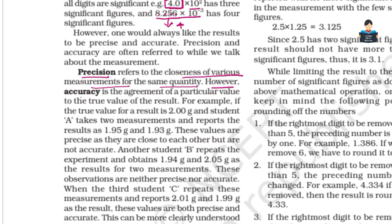However, accuracy is the agreement of a particular value to the true value of the result. Accuracy means the measured value is close to the exact true value. For example, if the true value is 2.00 grams and student A reports 1.95 grams and 1.93 grams, these values are precise.